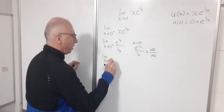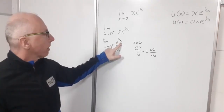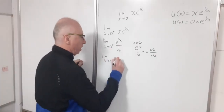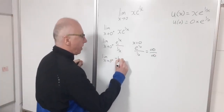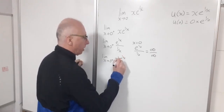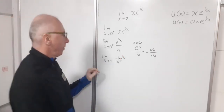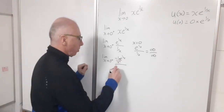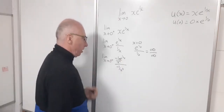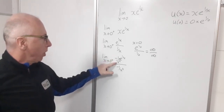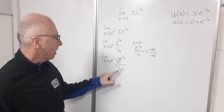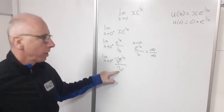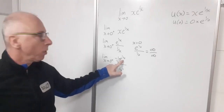Applying L'Hôpital's rule: the derivative of e^(1/x) is negative 1 over x squared times e^(1/x), and the derivative of the denominator 1/x is also negative 1 over x squared. So I've got (−1/x²)·e^(1/x) in the numerator and −1/x² in the denominator. These cancel out, leaving just e^(1/x).